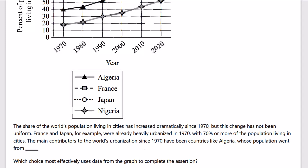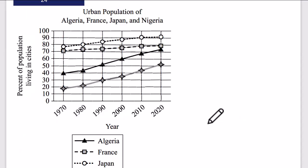Command of evidence quantitative — we need data from the graph to complete the assertion. We've got a blank assertion to complete. Looking at the graph, we've got urban populations — city populations for France, Japan, developed countries, and what looks like African countries, as percent of population. The developed countries have much higher urban populations but they've kind of plateaued, while the African ones are lower but growing more quickly and coming close to the more developed countries over the last 50 years.